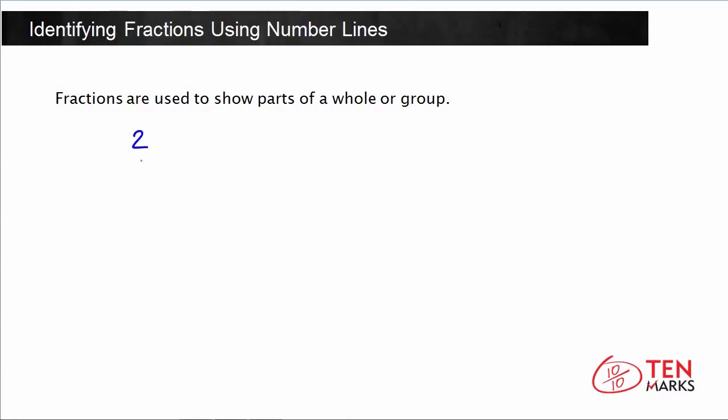Let's take a look at the fraction 2 fifths. Fractions have two parts — a top part and a bottom part — and they name different parts of the whole or group. The bottom part is called the denominator, and it tells you how many equal parts are in the whole.